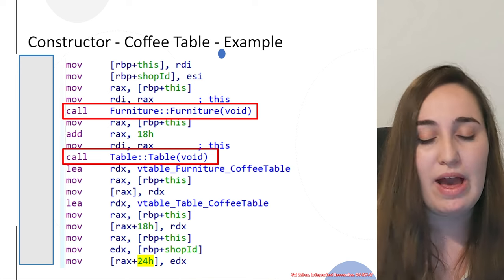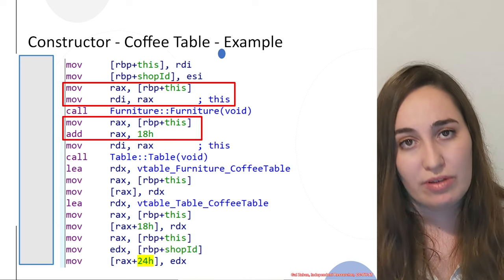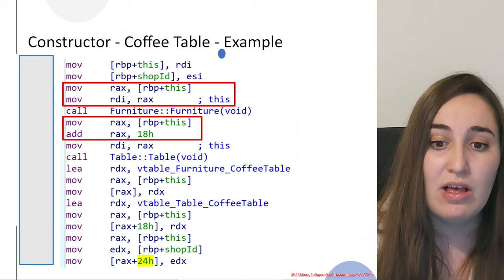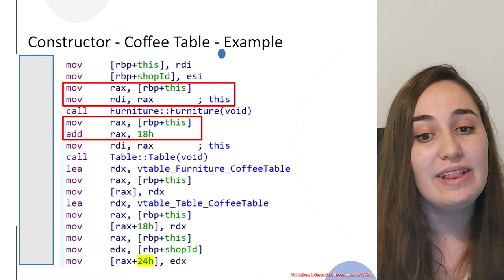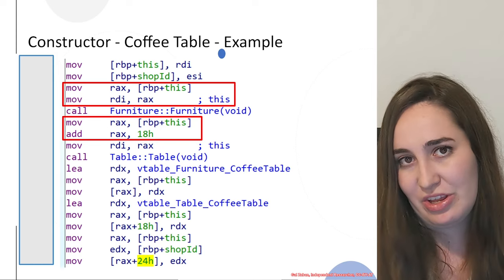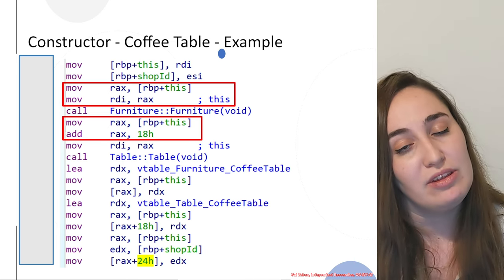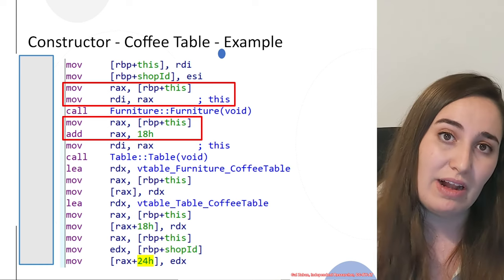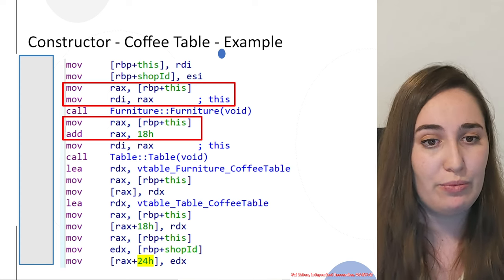One of the most unique things here is that there are two constructor calls: the first call to the furniture constructor and then the table constructor. Both are base classes for the derived class, coffee table. The constructor calls receive as a parameter the 'this' pointer of the derived class. The base class constructor receives this pointer and fills all the relevant members into it, giving us all the relevant members from the base classes in the derived class pointer.